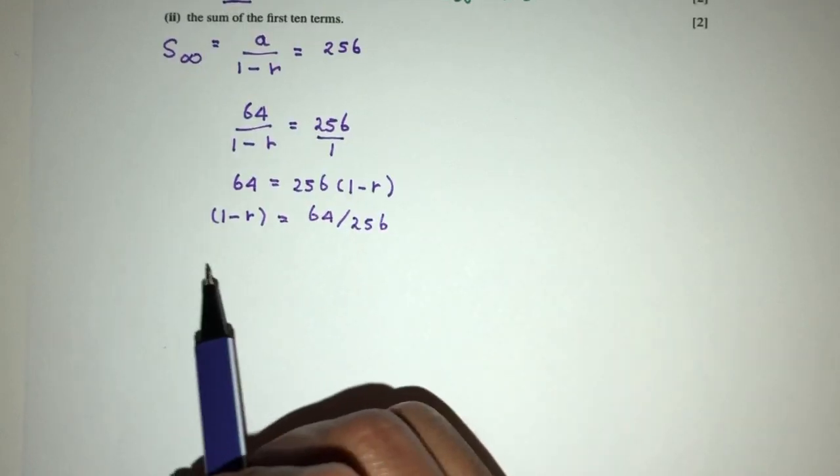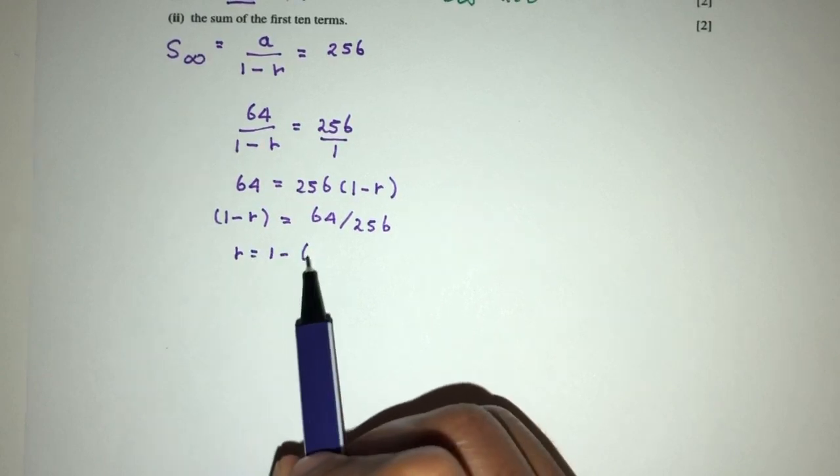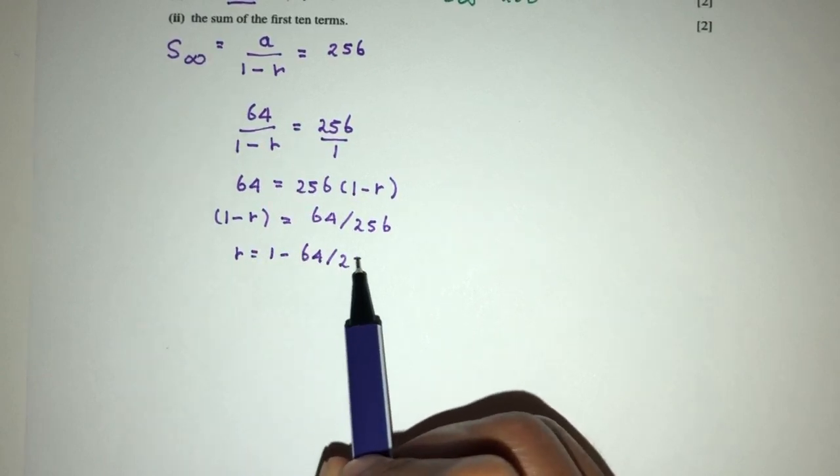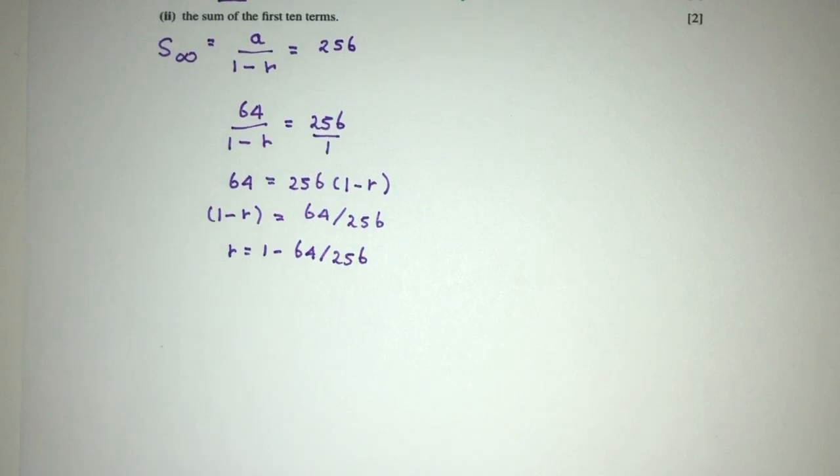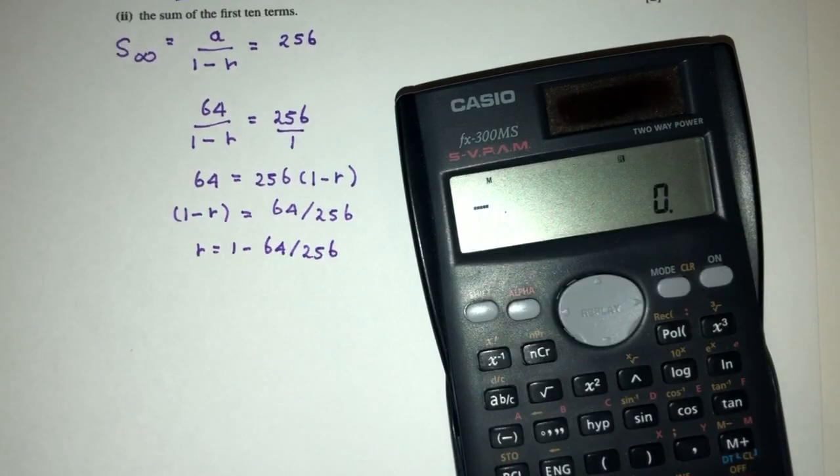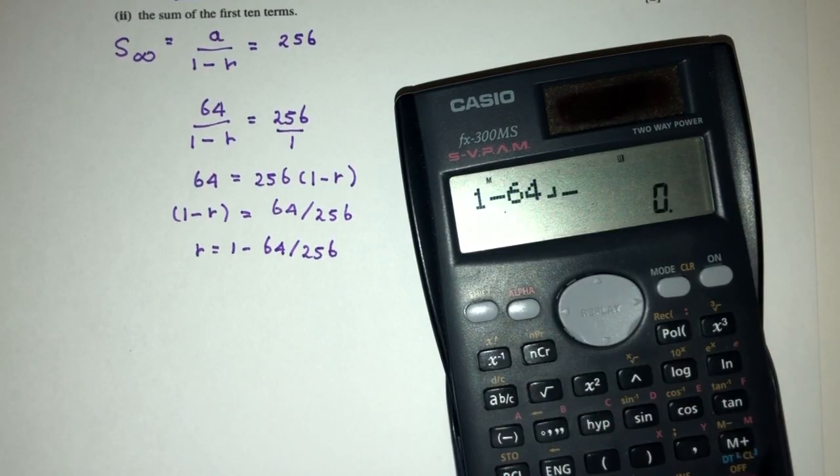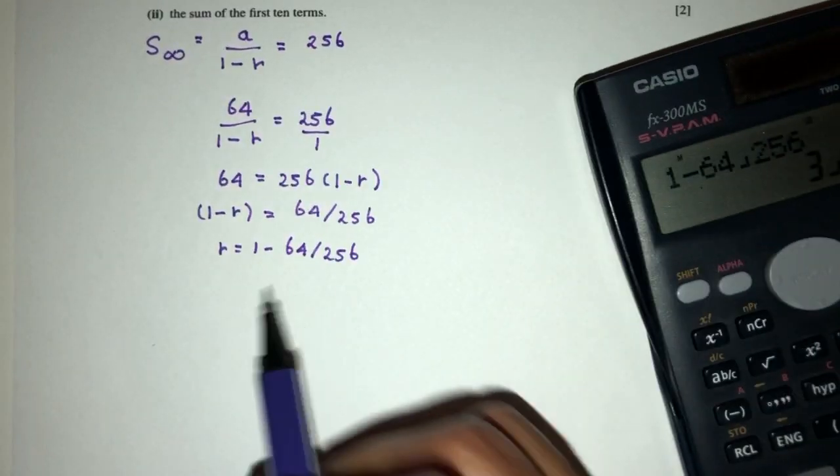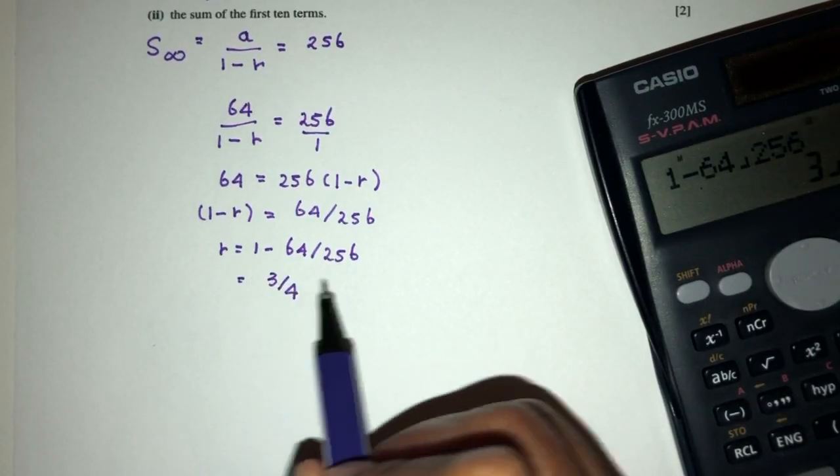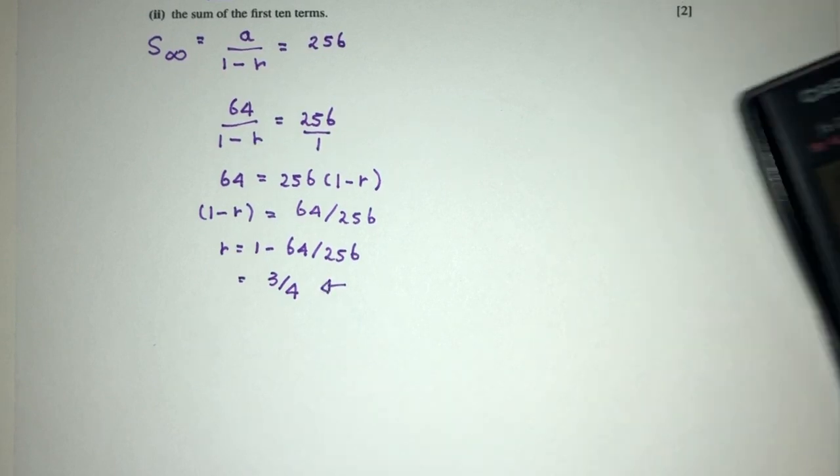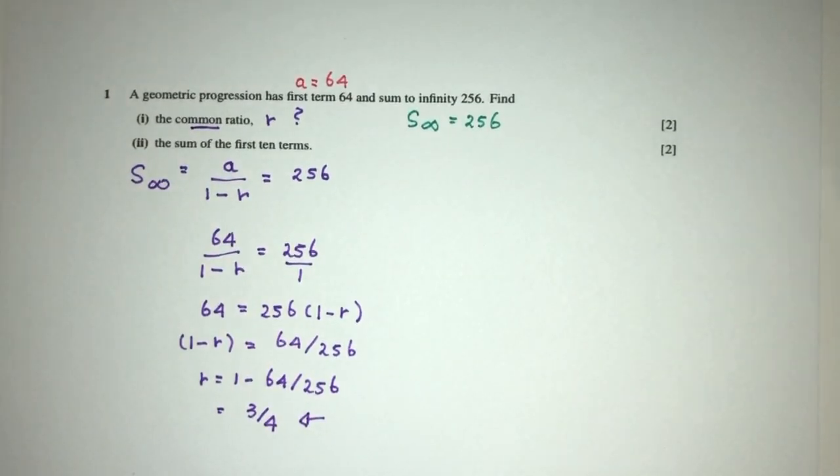Exactly. Now, R will be 1 minus 64 over 256. So let's see what does that give you. That will be equal to 3 over 4. That is your value of R, and this is equal to the common ratio that we were trying to find in part one.